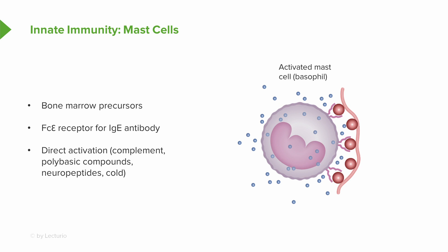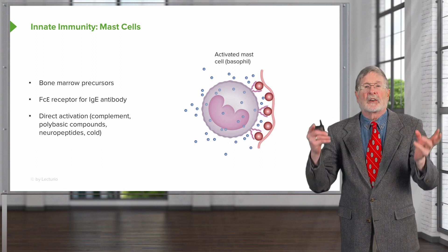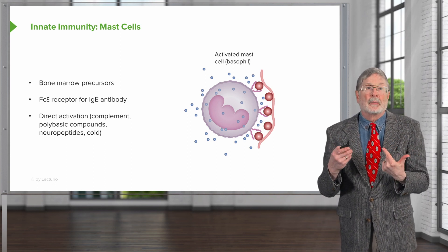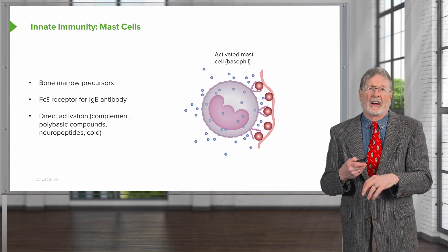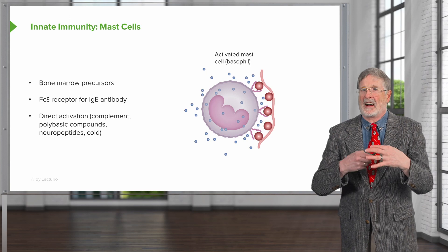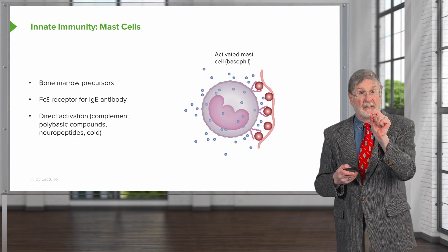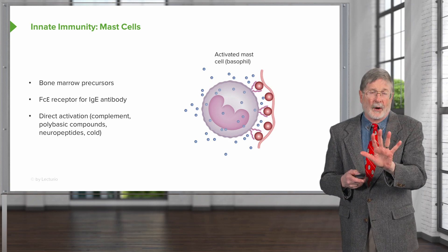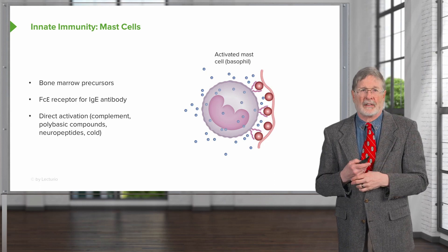Certain neuropeptides and even the cold can activate mast cells. Those of you who go out into the snow and your nose runs like a faucet — that's because your mast cells are degranulating, releasing their compounds into the adjacent tissue, and causing increased vascular permeability and increased vasodilation. That's why your nose runs. You can have specific activation through IgE and a variety of other pathways, because after all, we want mast cells to be good sentinels detecting potential danger in the local environment.